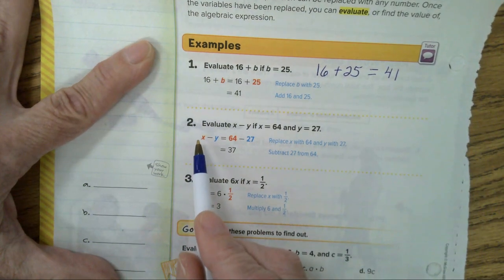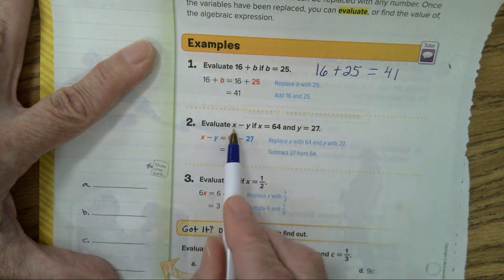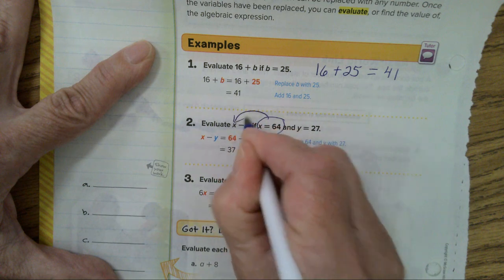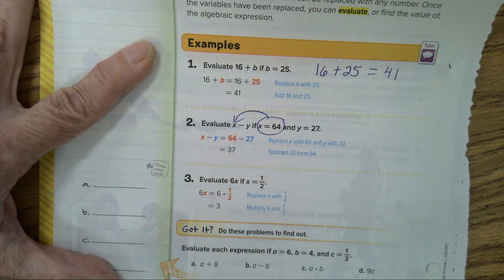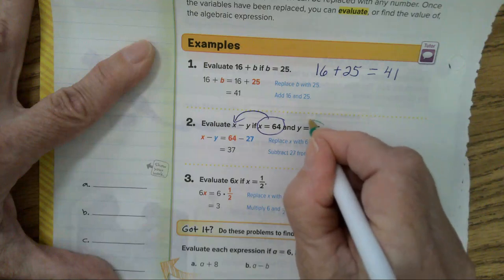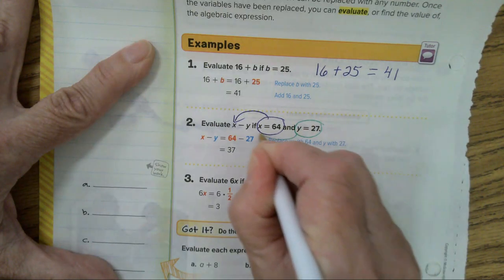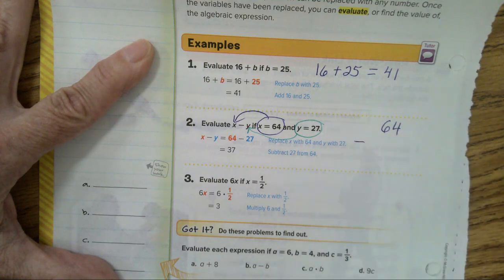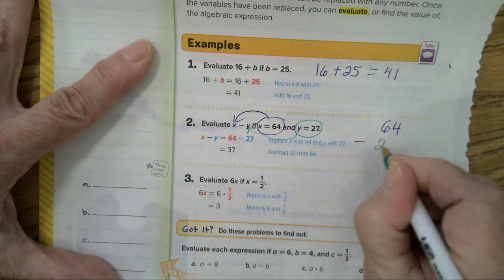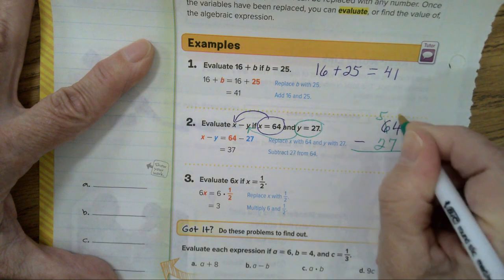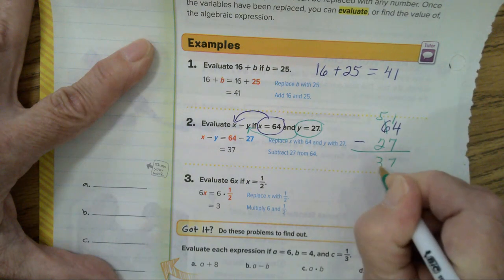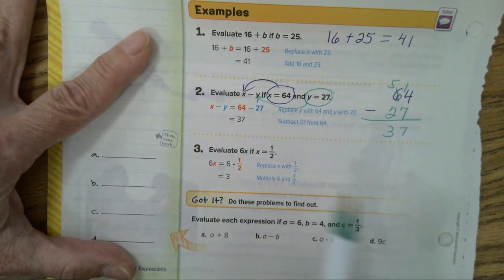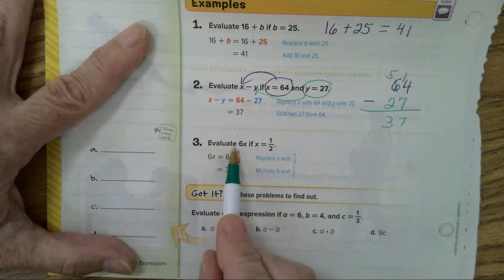Now, let's look at example two. Evaluate x minus y. If x is 64 and y is 27. So, you're just going to have 64 minus 27. Borrow. And your answer is 37. Pretty easy.